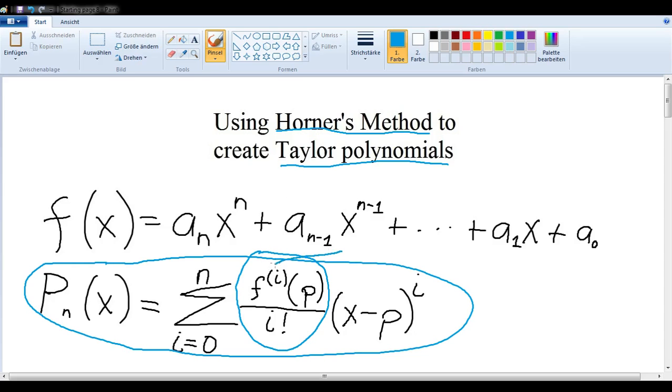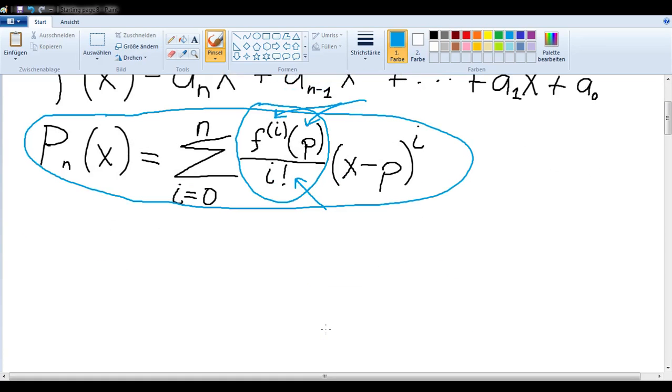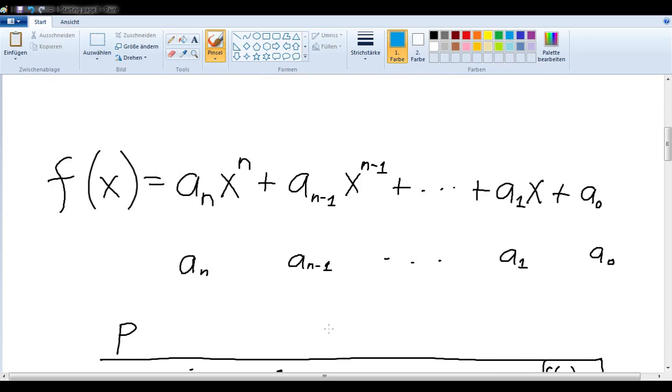This is the i-th derivative of f at the value p divided by i factorial. That is exactly what we get at the end of each line if we do Horner's scheme. So let's look and see how that works.